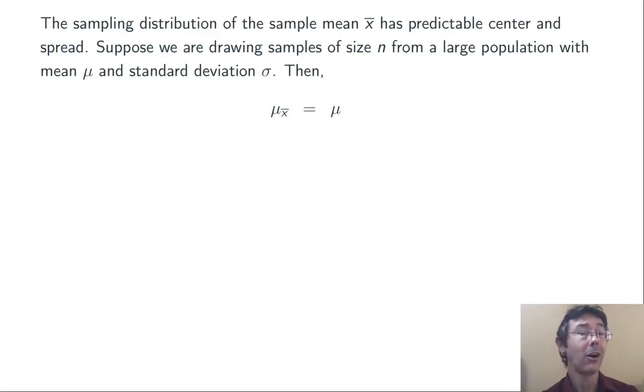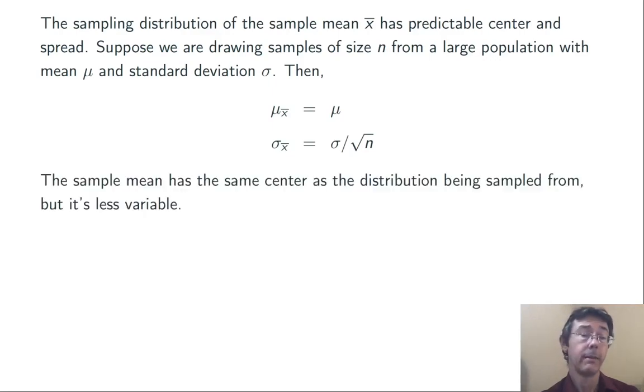In other words, the sample mean, on average, is going to be the same as the population mean. The standard deviation of the sample mean is going to be the population mean divided by the square root of n. In words, this is saying that the sample mean has the same center as the distribution being sampled from, but it's less variable.